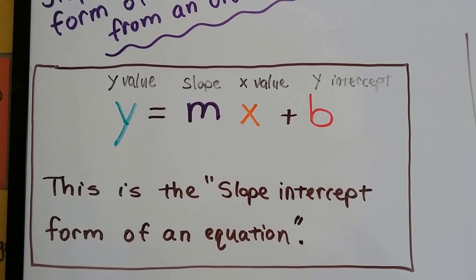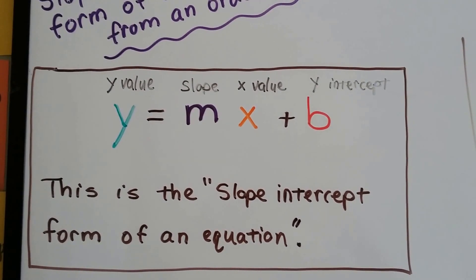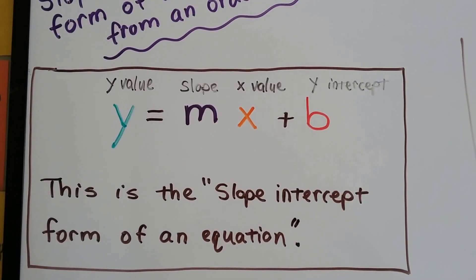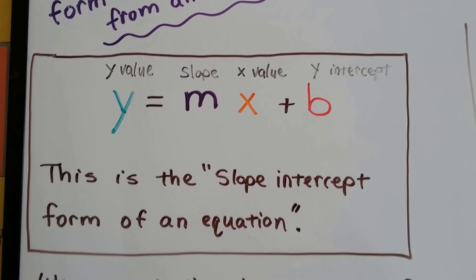The x and the y are x and y values. The slope is m, like in the slope formula. And this b is the y-intercept. It's where the line hits the y-axis.